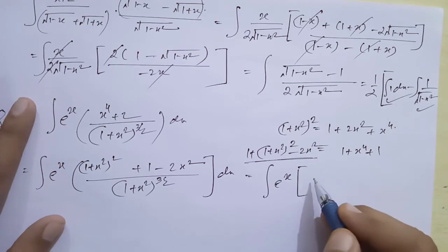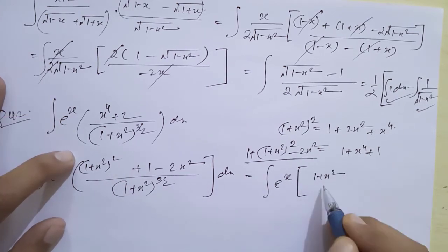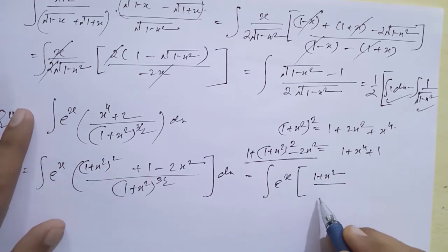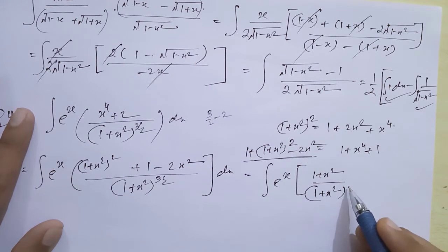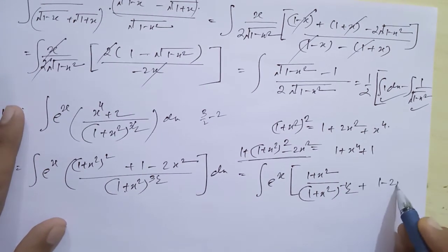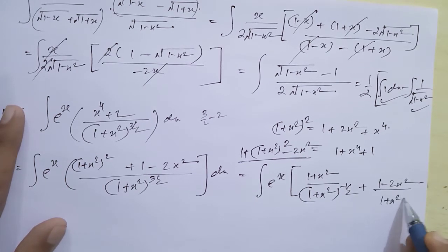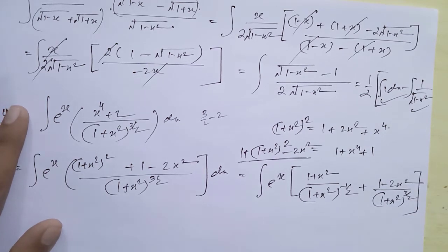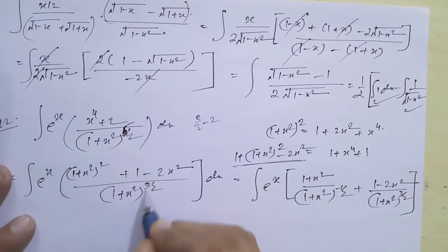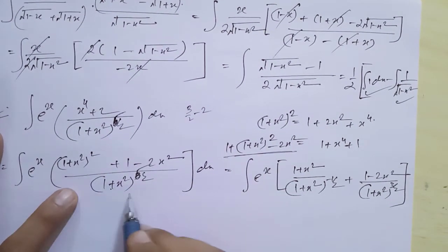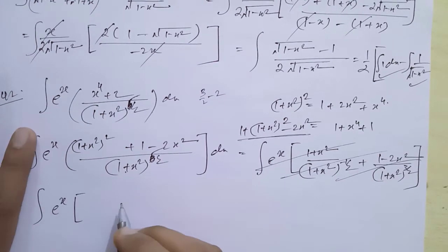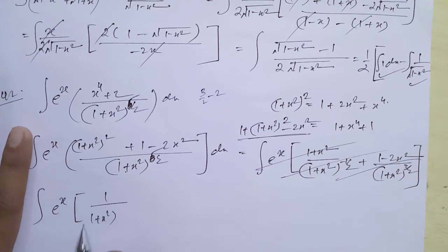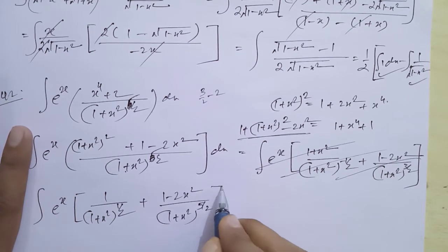This becomes integral of e^x · [(1+x²)/(1+x²)^(3/2) − 2x²/(1+x²)^(3/2) + ... ]. The first term simplifies to 1/(1+x²)^(−½) and the power 3/2 − 2 = −½. Separating terms gives integral of e^x · [1/(1+x²)^(½) + (1 − 2x²)/(1+x²)^(5/2)] dx.